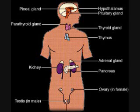Thyroxin, or T4, and T3. Gland: Thyroid Gland. Function: increases metabolism and basal metabolic rate.